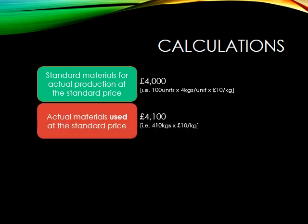Next, I'm going to calculate what the actual materials used should have cost at the standard price. I used four hundred and ten kilograms, which should have cost ten pounds per kilogram, giving a total of four thousand one hundred pounds. The difference between those two figures is my material usage variance — that's one hundred pounds adverse, because the actual materials used at the standard price was higher than the standard materials that should have been used at the standard price.